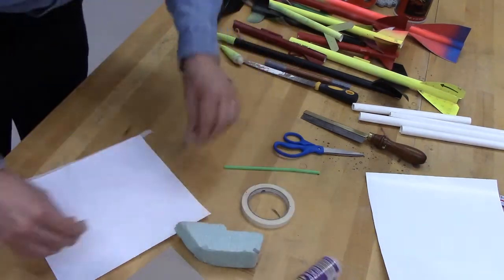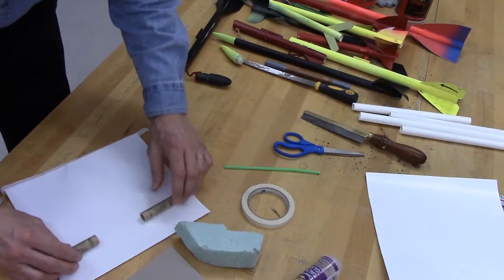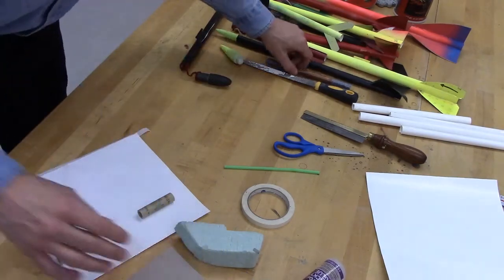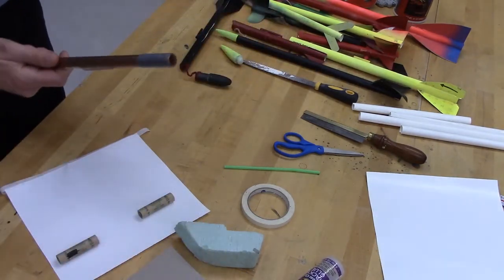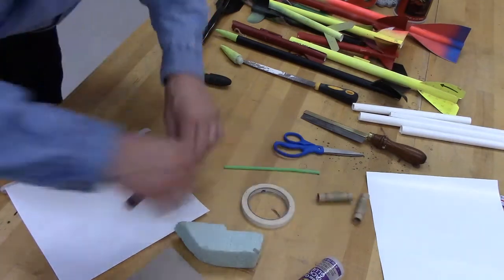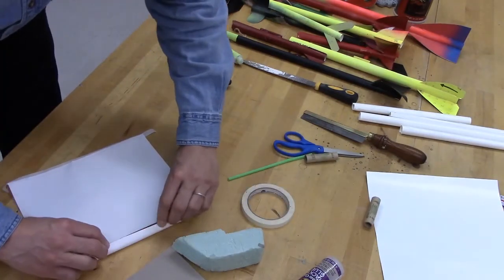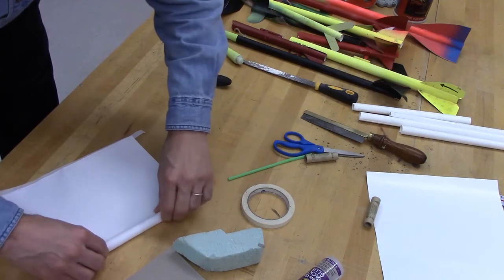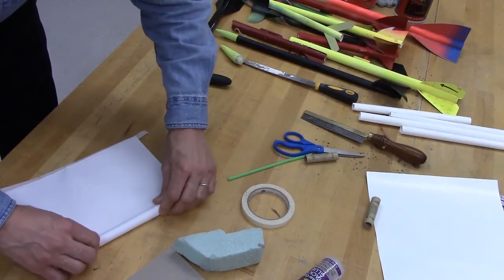Now you can either roll it around two rocket engines, or in my case I've made some custom pieces because I make a lot of rockets with copper pipe and tape just the right diameter. So I'm going to go ahead and do that and roll the tube like so.